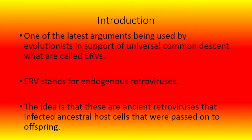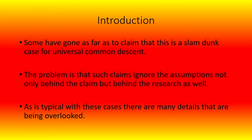One of the latest arguments used by evolutionists to support universal common descent are what are called ERVs. ERV stands for endogenous retrovirus. The idea is that these are ancient retroviruses that infected ancestral host cells that were passed on to offspring. Some go as far as to claim that this is a slam dunk case for universal common descent. The problem is that such claims ignore the assumptions not only behind the claim, but behind the research as well.